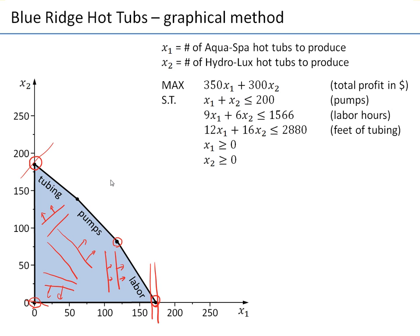There is an exception to this: if the feasible region is unbounded from one of the sides, we cannot just enumerate corner points — we have to see in which direction the level curves take us. If the region was unbounded on one side and the level curves moved towards the unbounded side, then we wouldn't have an optimal solution. That's why we can only use this method in the case of a bounded region.